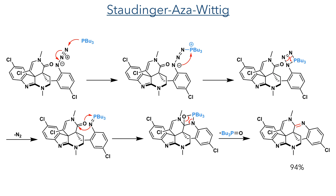With this in place, they then carried out a Staudinger reduction followed by a spontaneous cyclisation. The azide present on the aromatic ring is attacked by tributylphosphine, generating a phosphonium intermediate that undergoes an intramolecular cyclisation producing a 4-membered intermediate that rapidly expels nitrogen gas to generate an aminophosphorane. This aminophosphorane then takes part in an aza-Wittig reaction: a [2+2] cycloaddition with the carbonyl of the amide forms a 4-membered intermediate that undergoes a cycloreversion, expelling tributylphosphine oxide and forming the target carbon-nitrogen double bond in a 94% yield.